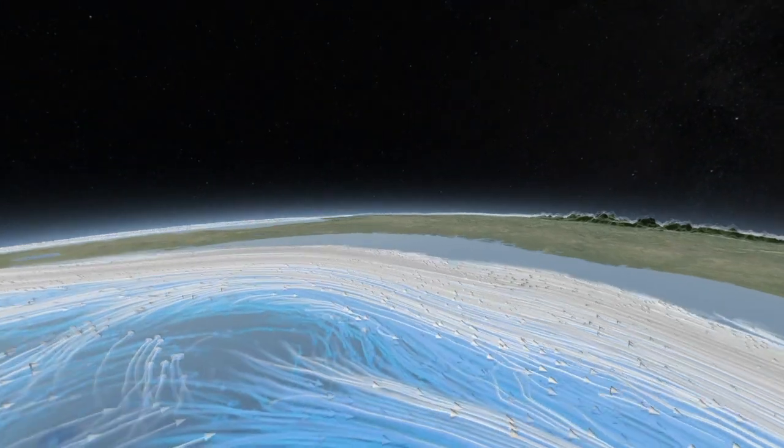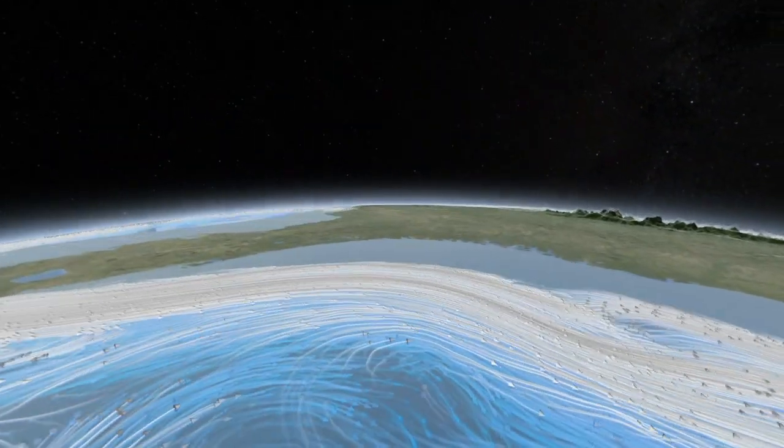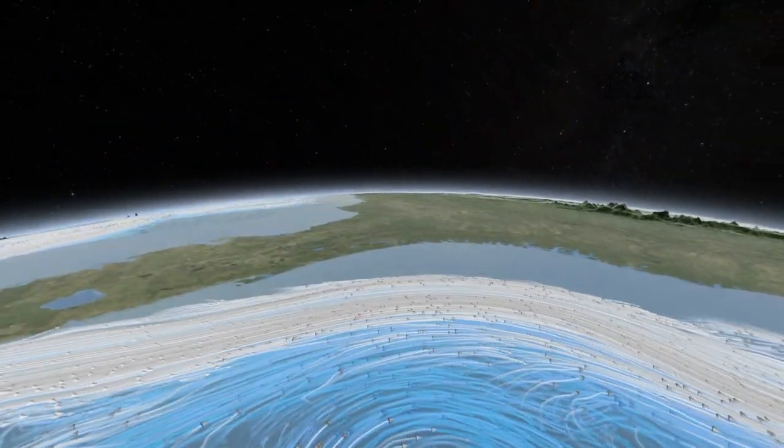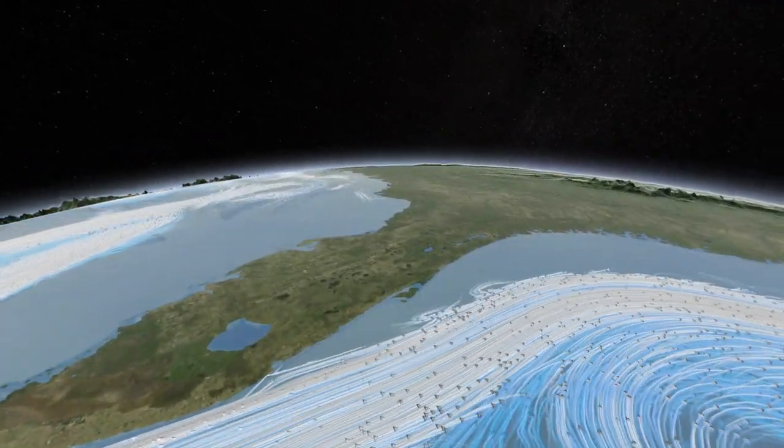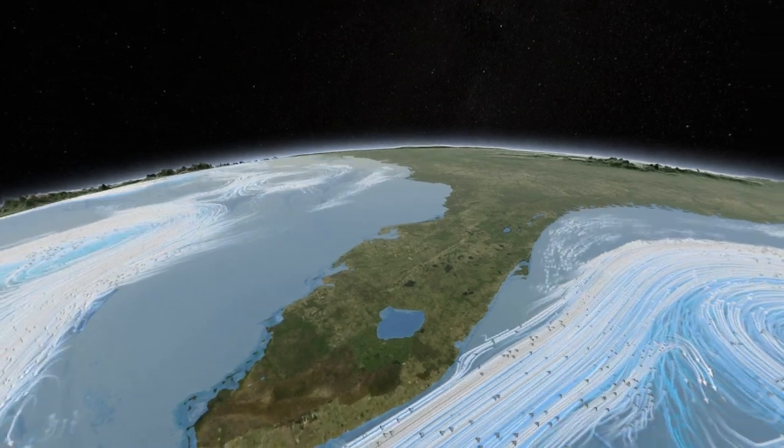Earth's climate engine has countless moving parts: tides and terrain, crosswinds and currents, all working to equalize temperatures around the globe.